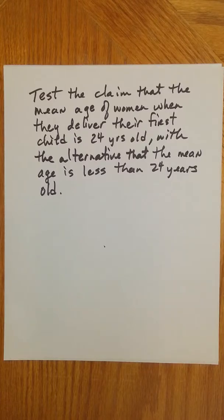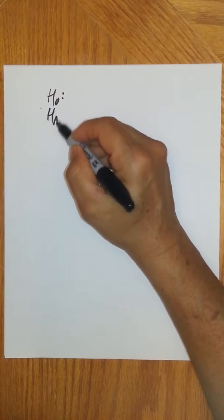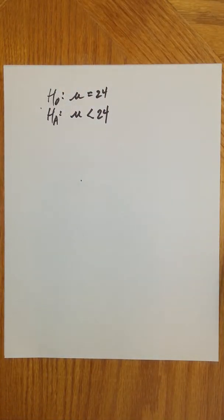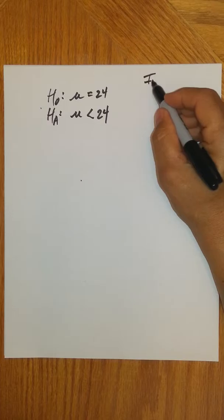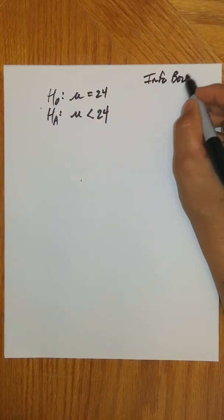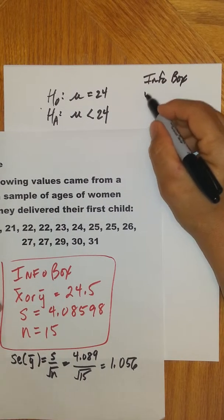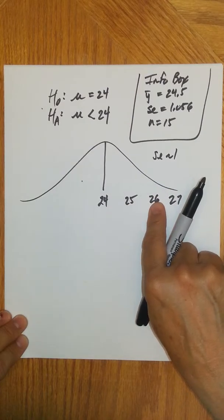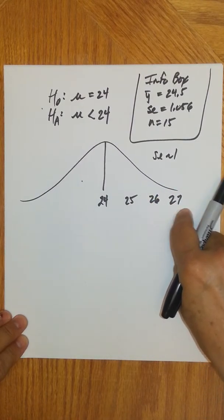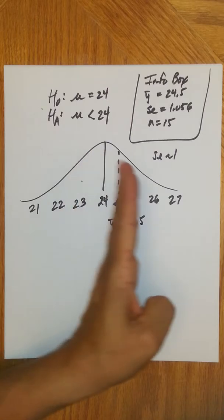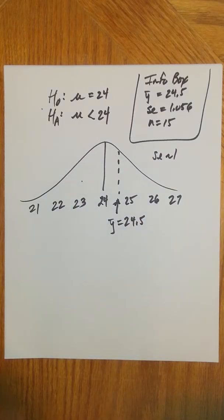Let's go ahead and start on our confidence interval. We'll do a 95% confidence interval. Remember, we're going to start with the sample mean and add or subtract a margin of error, which will be T times the standard error of the sample means. We get most of this information from our info box. So Y-bar is 24.5 — that's our sample mean — plus or minus T, which we need to look up, and we already found the standard error is 1.056.